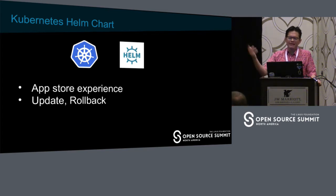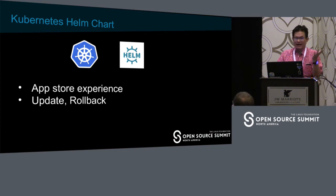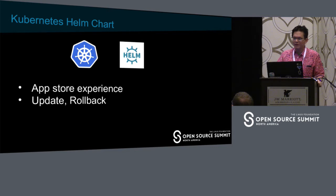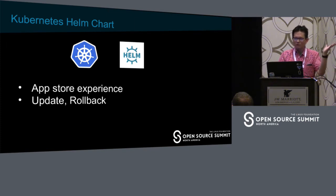Kubernetes, like DCOS, has Helm Charts — a similar App Store experience that supports update and rollback of stateful apps. Helm charts are available for Cassandra, Elastic, HDFS, Kafka, Mongo, MySQL, Postgres, Redis, and more. And it's growing.